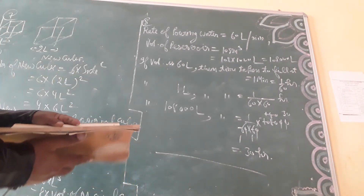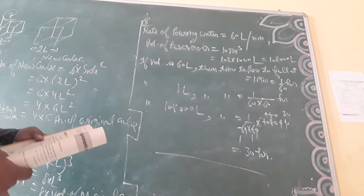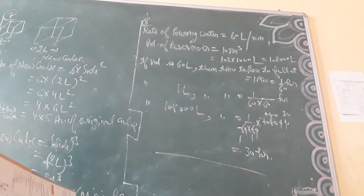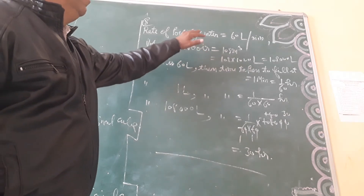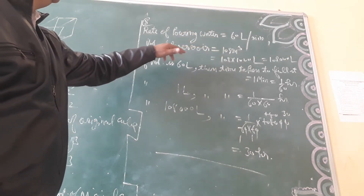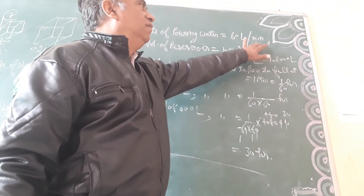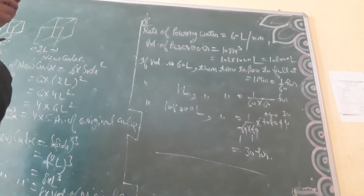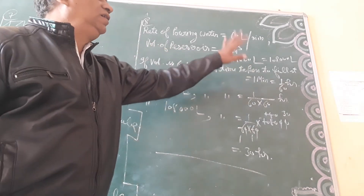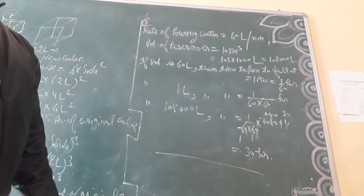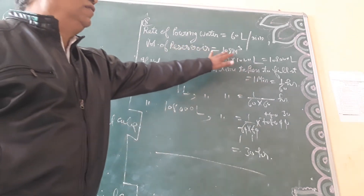Question number 8: the rate of pouring water into a reservoir. Water is poured into the reservoir at a rate of 60 liters per minute, meaning at 1 minute, 60 liters of water goes in. The volume of the reservoir is 108 cubic meters.